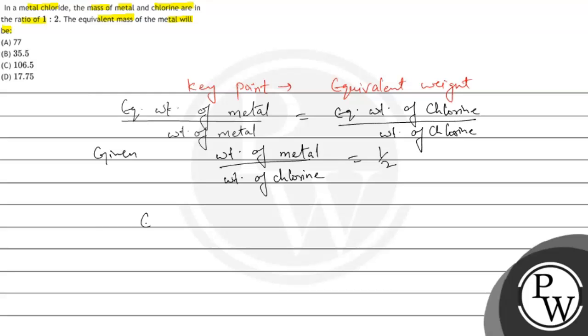So equivalent weight of metal divided by 1 is equal to equivalent weight of chlorine, which is 35.5, divided by 2.